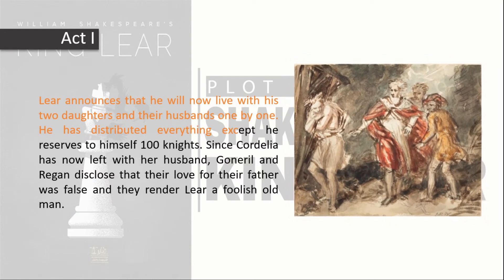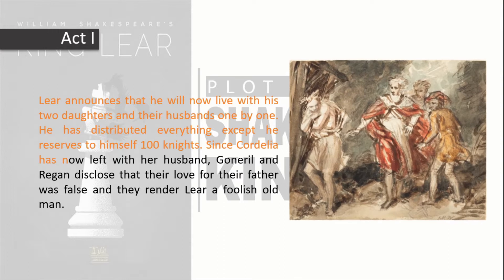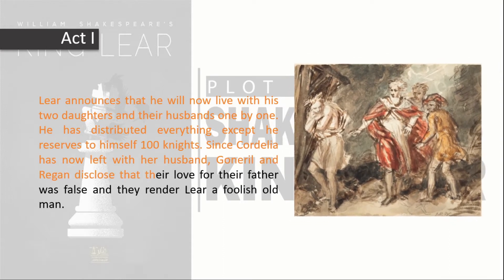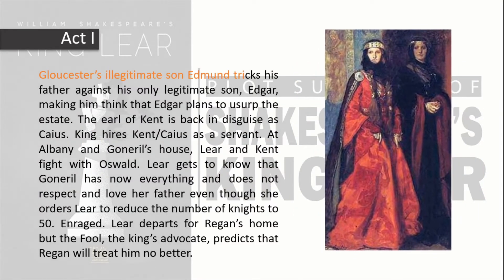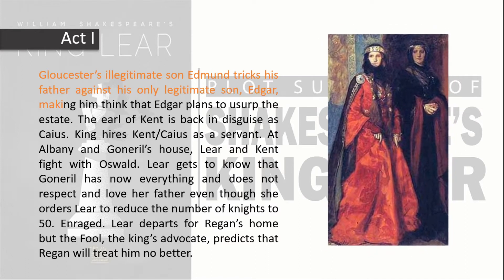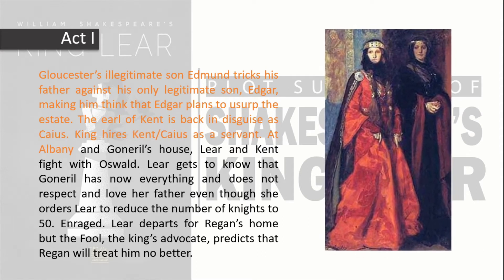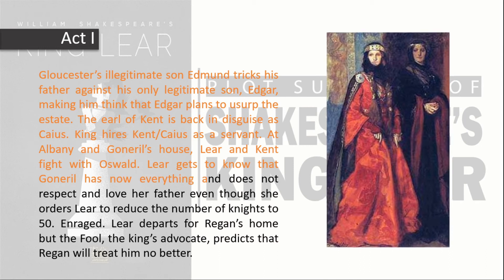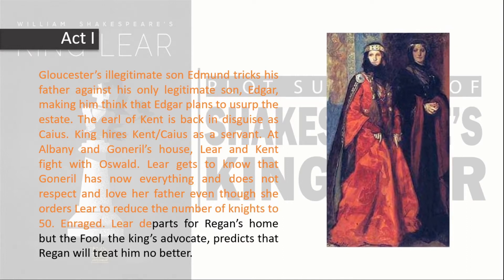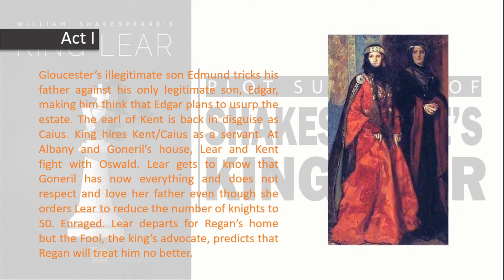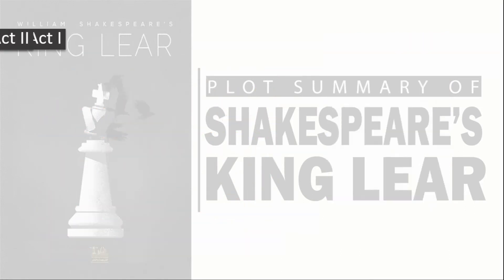Lear announces he will now live with his two daughters and their husbands one by one, reserving for himself one hundred knights. Since Cordelia has left with her husband, Goneril and Regan disclose that their love for their father was false and they render Lear a foolish old man. Edmund tricks his father against his legitimate son Edgar, making him think Edgar plans to usurp the estate. Kent returns in disguise as Caius and the king hires him as a servant. At Albany and Goneril's house, Lear and Kent fight with Oswald. Lear learns that Goneril no longer respects him and orders him to reduce his knights to fifty. Enraged, Lear departs for Regan's home, but the Fool predicts that Regan will treat him no better.